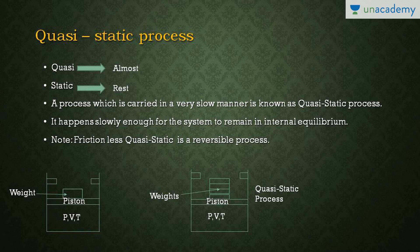But if we keep N number of weights over the piston and remove these weights one by one, the piston will move in a very slow manner till a final point — slowly enough for the system to remain in internal equilibrium. If we do this process in a very slow manner, all the points will be in internal equilibrium. For example, removing weight one gives point one, removing weight two gives point two, weight three gives point three, weight four gives point four — these are the equilibrium points.